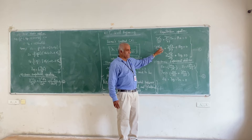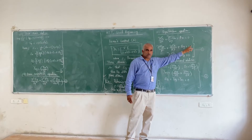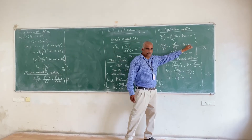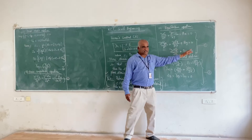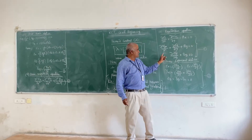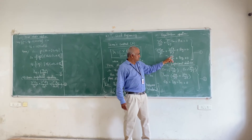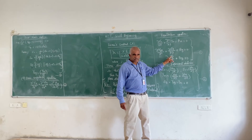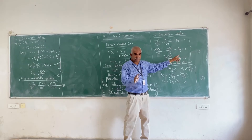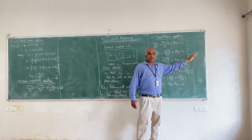Similarly for the y-direction: (∂τ_yx/∂x) + (∂σ_y/∂y) + body force in y-direction = 0, where tau_yx = tau_xy. For the z-direction, since tau_yz and tau_zx are equal to 0, the terms cancel, giving: (∂σ_z/∂z) + body force in z-direction = 0. This completes equilibrium equation set number 1.